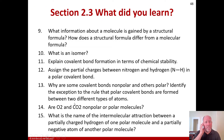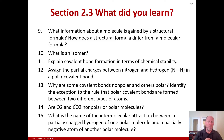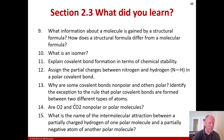You should now be able to define what information about a molecule is gained by a structural formula and how it differs from a molecular formula, explain what an isomer is and how to identify one, explain covalent bond formation in terms of chemical stability, assign partial charges between nitrogen and hydrogen in a polar covalent bond, explain why some covalent bonds are polar and others nonpolar, determine whether O2 and CO2 are nonpolar or polar molecules, and name the intermolecular attraction between a partially charged hydrogen of one polar molecule and a partially negative atom of another polar molecule. Working through these questions on your own will help greatly with understanding and exam preparation. That is section 2.3.